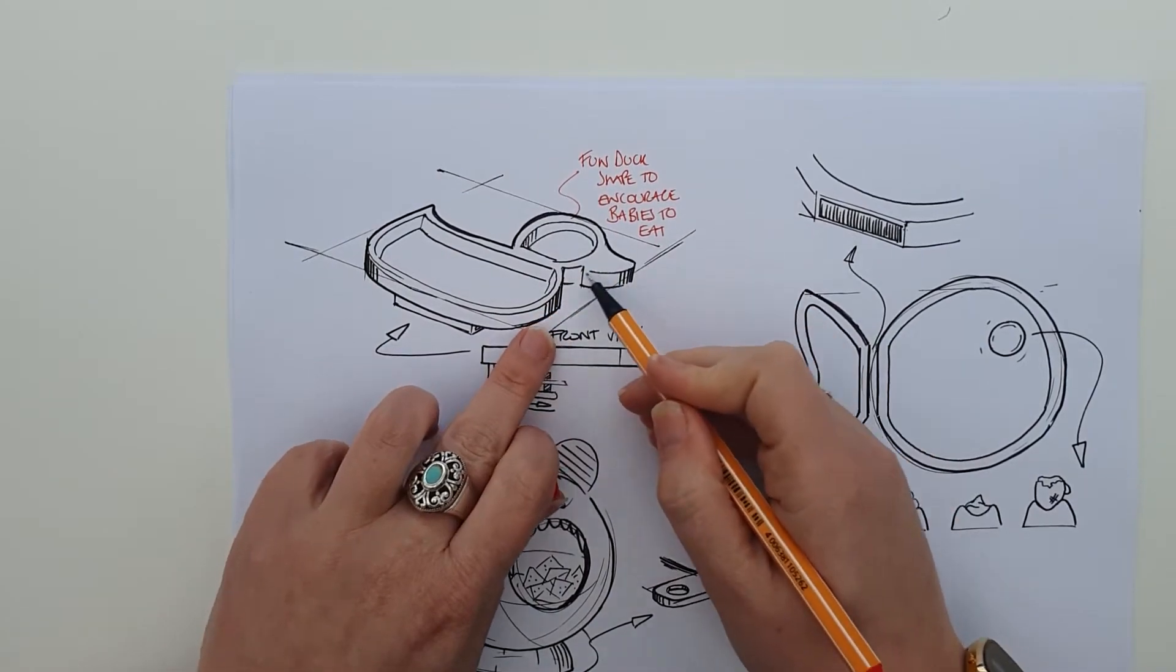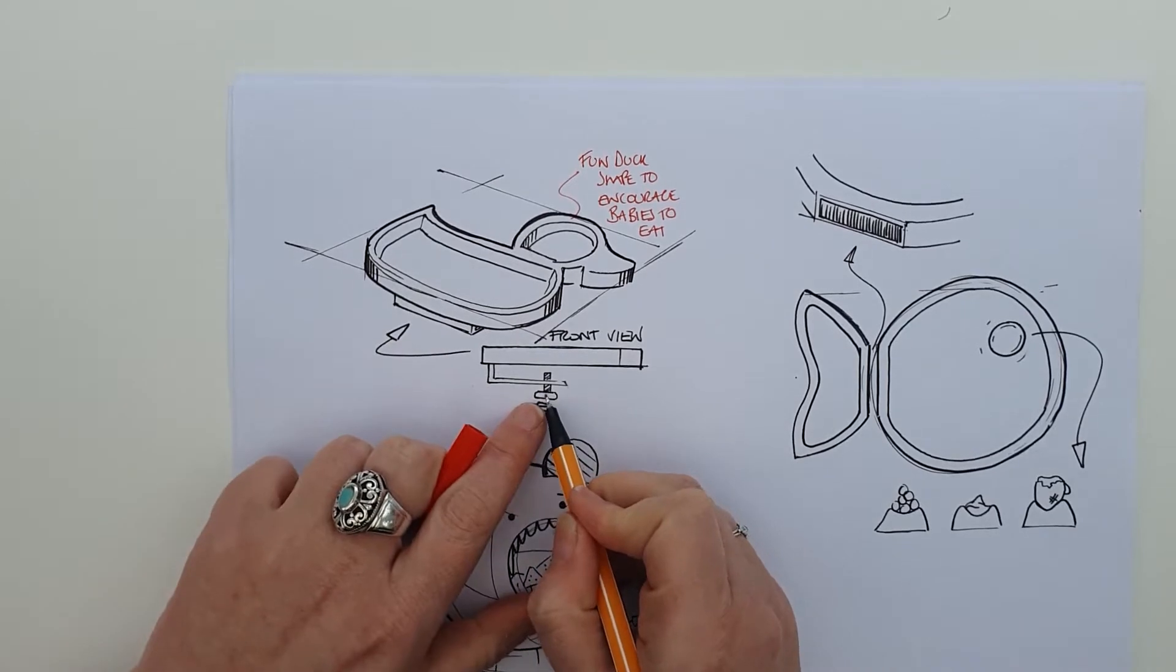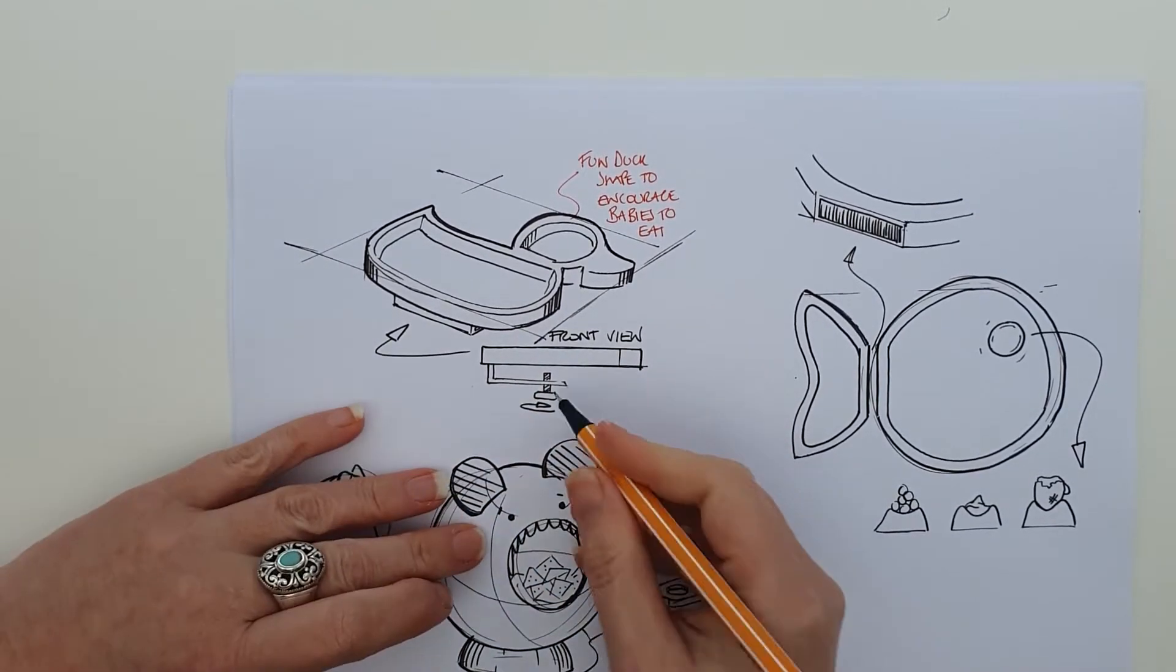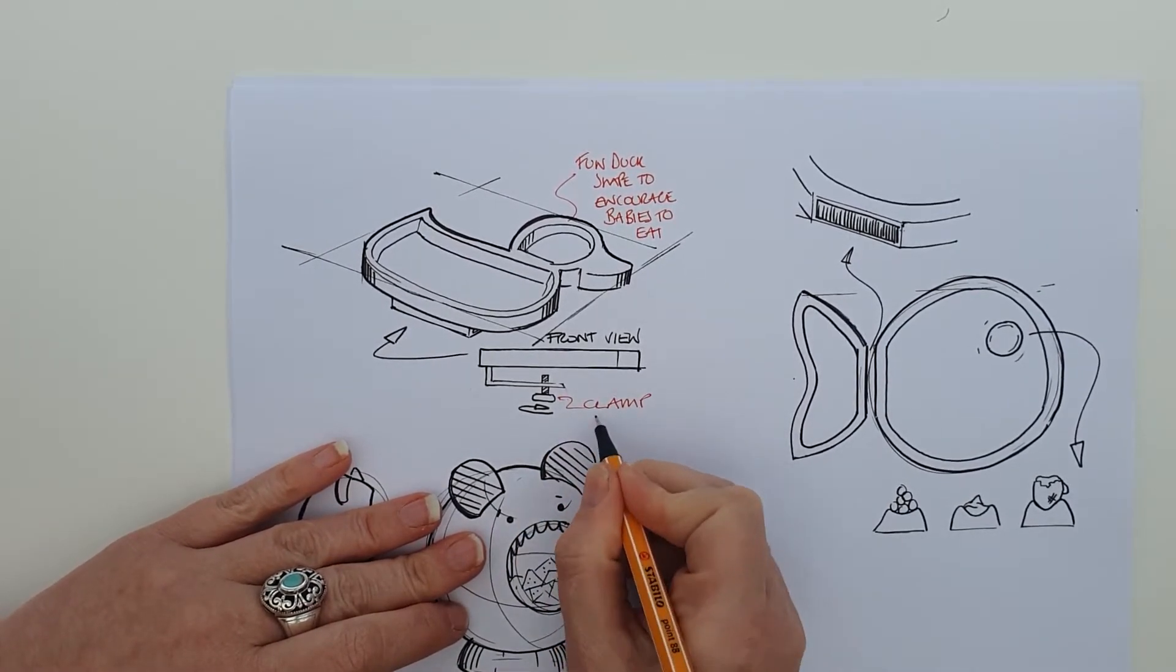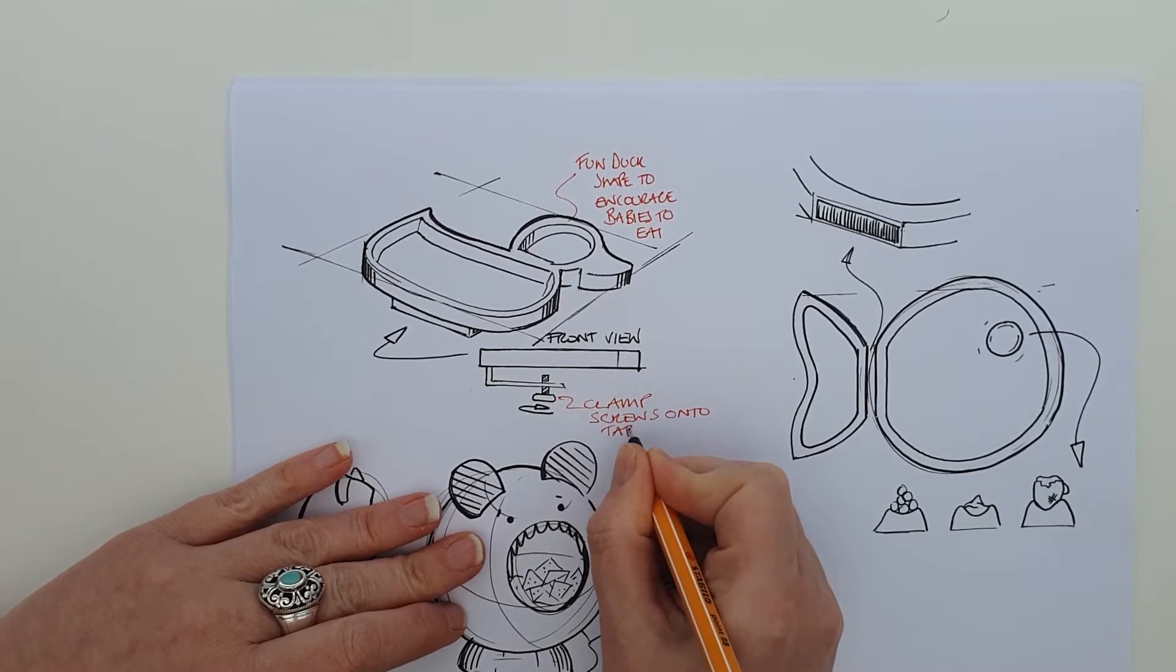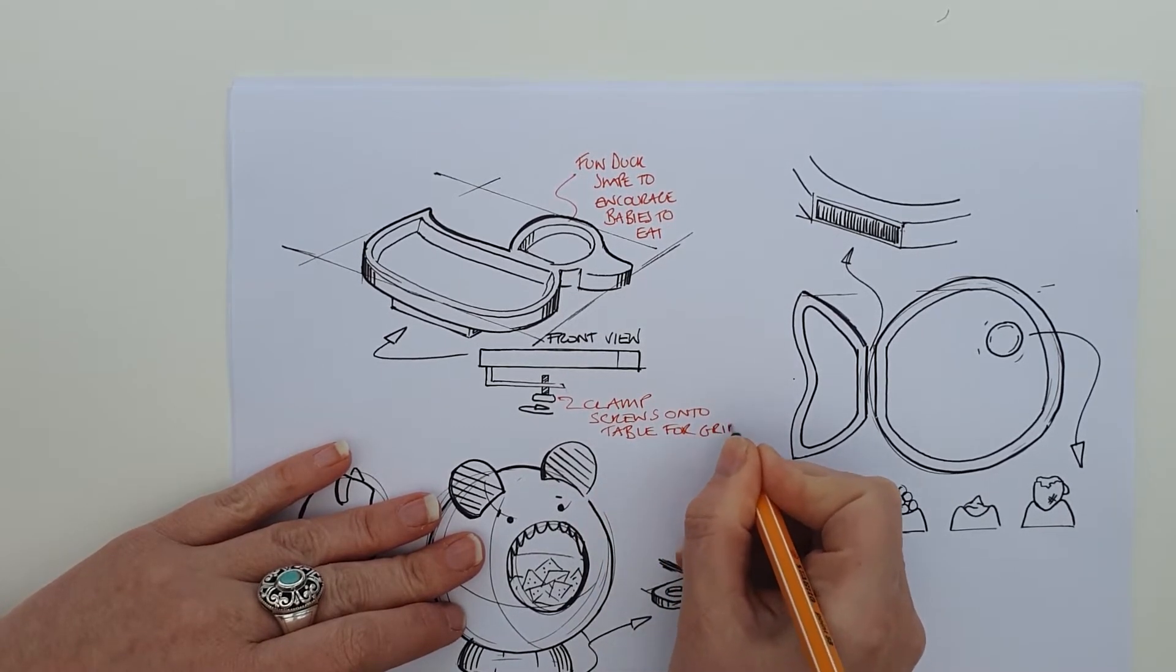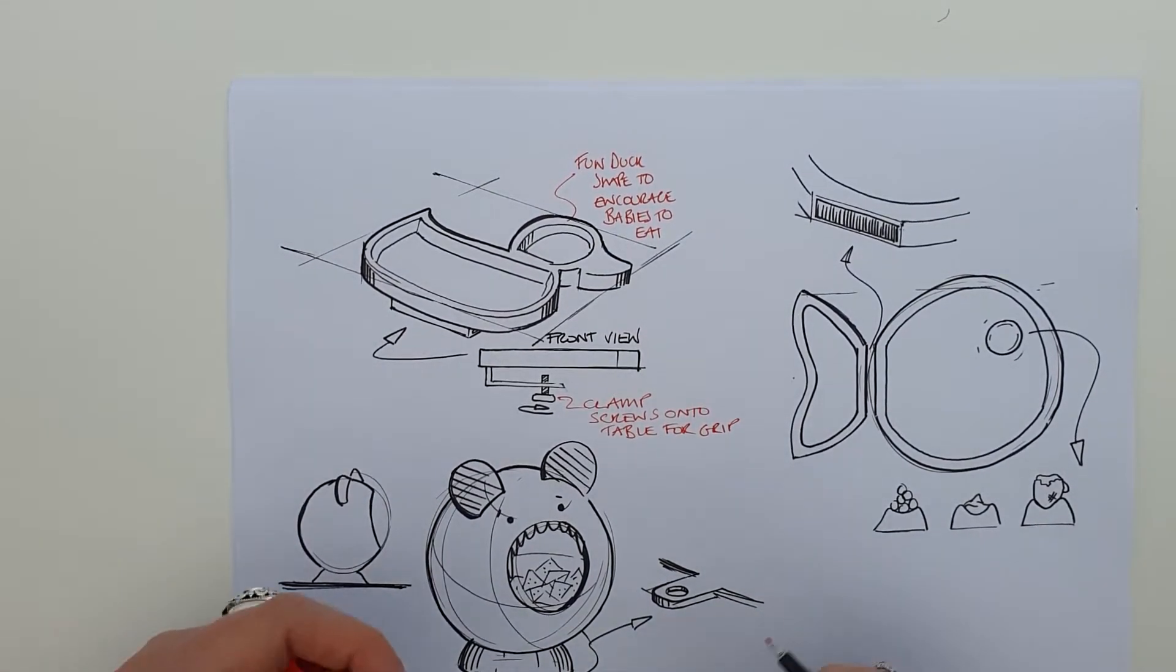Simple - that shows me that you have an understanding of the brief. You know that you had to make a fun shape for the kids to encourage them to eat, and you've said that and backed it up with your sketch here. This part here is a little clamp that screws so that it can fix onto a table. So, clamp screws onto table for grip - and that would be function. That's how it enables it to work; it means the child wouldn't be able to pull it off the table.